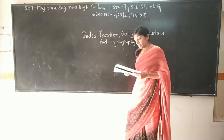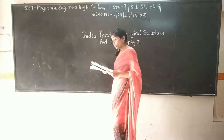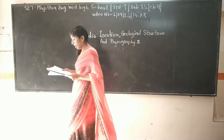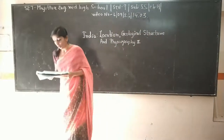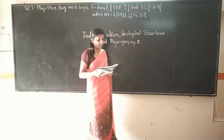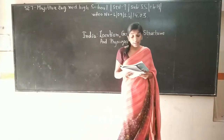Next is desert soil. Such soil is found in the arid regions of Rajasthan, Punjab, and Haryana.